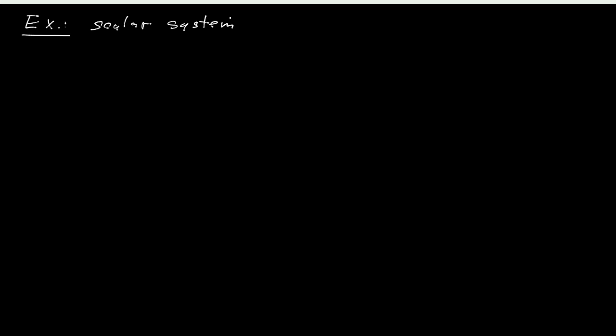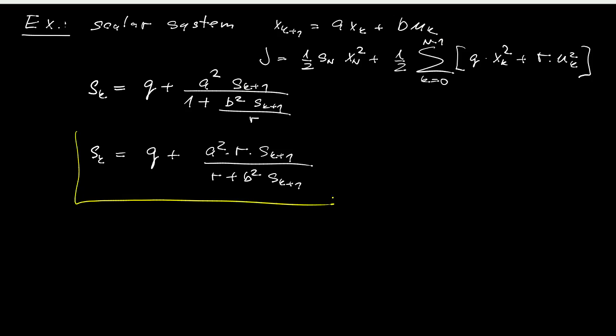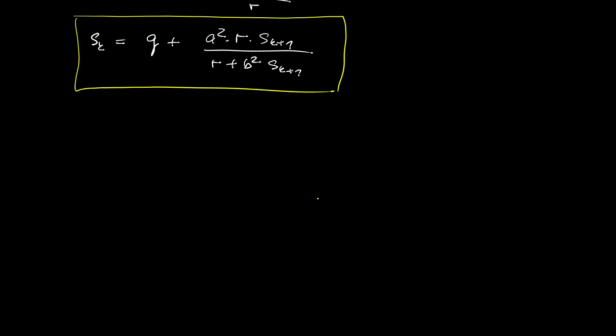Instead let's have a look at an example. It will be a scalar one because honestly speaking it's very often through these scalar examples that we get some intuitive insight into the problem. So this is the system and the cost function. Now the difference Riccati equation looks like this and after simplifying it a little bit this is what we get. So this is one way how to write a difference Riccati equation.